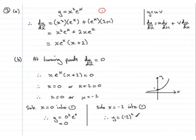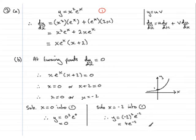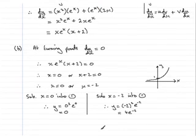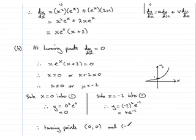Minus 2 squared is 4, so we get y equals 4e to the minus 2. Leave the answer in exact form — if you used a calculator you'd get an infinitely long decimal and would have to round it. So the turning points are at (0, 0) — the origin — and at (minus 2, 4e to the minus 2). That's the end of part b.